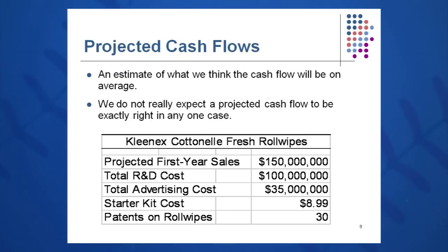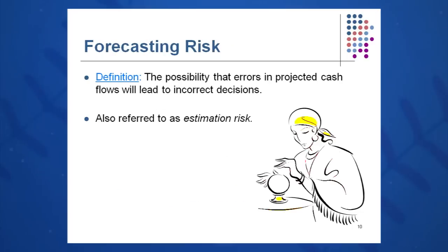What we try to do is estimate what we think the cash flow will be in a particular year on average, but it's not going to be exactly right. For example, Cottonelle Fresh Roll Wipes had projected first year sales of $150 million, R&D cost of $100 million, advertising cost of $35 million, a starter kit at $8.99, and 30 patents on this product. It turns out they just never sold. It was thought that wet toilet paper would be a booming market, and it just never happened. So, there is a possibility that errors in our projections can lead to incorrect decisions, and it really happened in spades with this Cottonelle Fresh Roll Wipe.